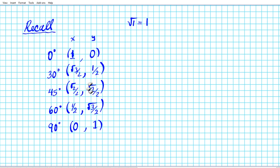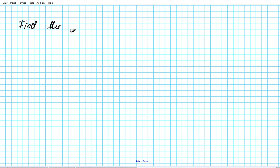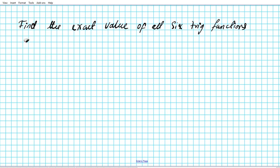These are the points that show up on the unit circle. All you have is a variation of the signs of the x's or the y's, or both of them. With that in mind, let's take a look at an example problem — finding the exact value of all six trig functions for a given angle.